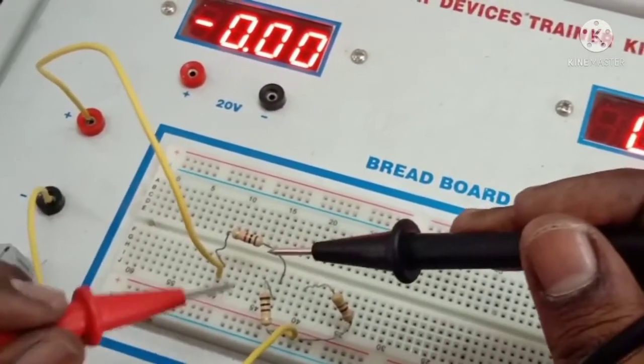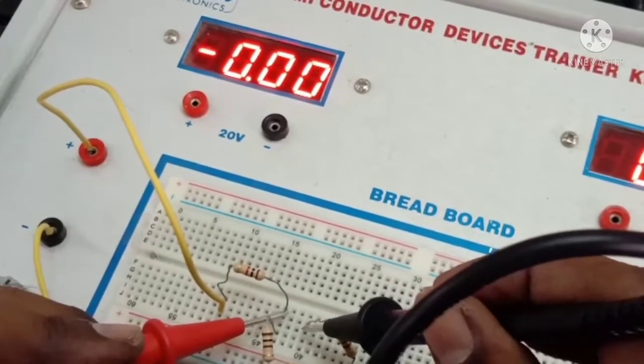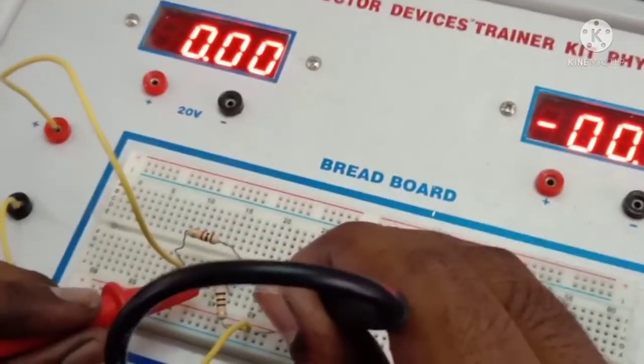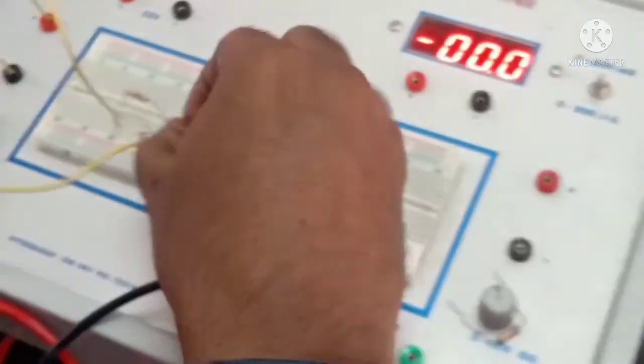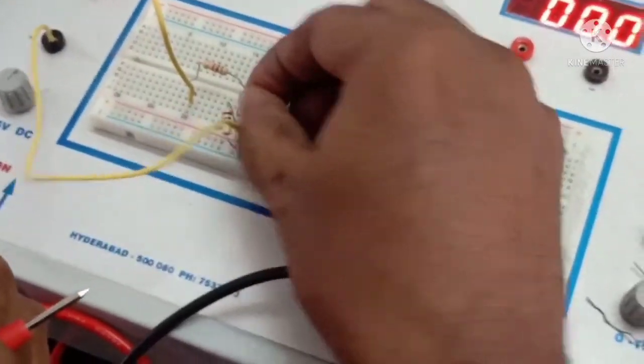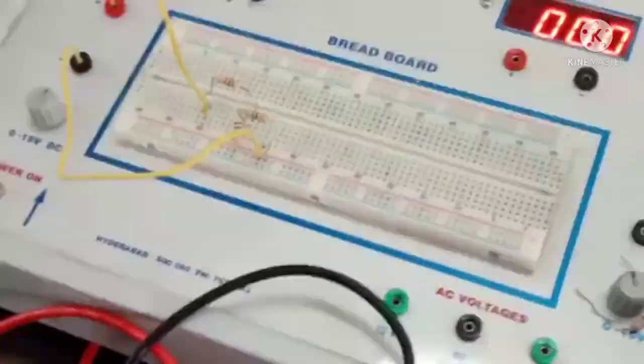Now I am trying to measure the current flowing through 470. This is when the excitation and response are not interchanged. And I got the current as 1.31 milliamperes. After measuring the current, you need to keep the resistor at its original position.